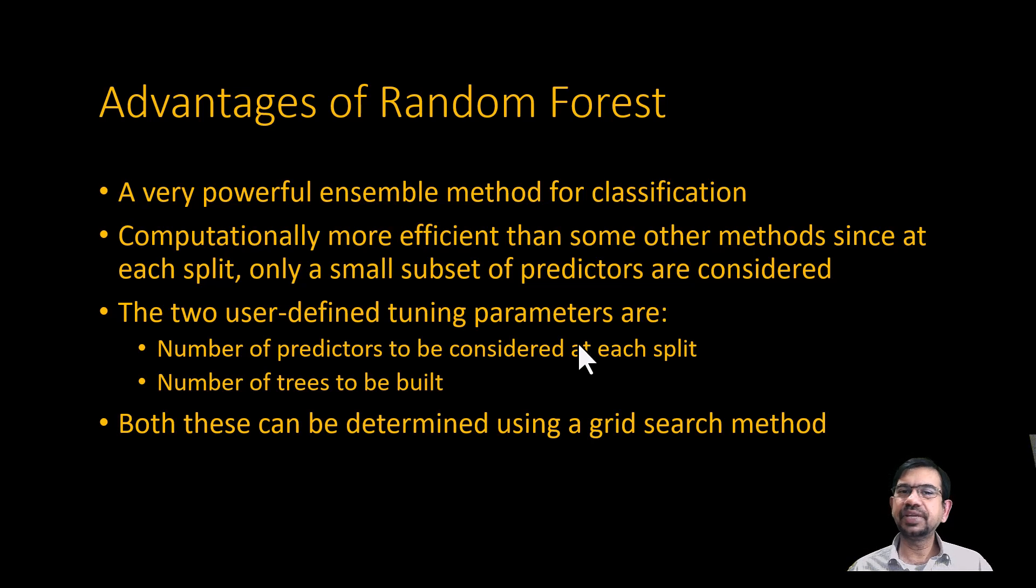Random forests are a really powerful algorithm for classifying records. They are computationally more efficient than some other ensemble methods like bagging. In random forest, there are two user-defined parameters: one is how many predictors to choose for a split, and how many trees to build. Instead of pre-defining these, we can also choose the optimal number of predictors and number of trees using a grid search, and the algorithm will give us the optimal values.